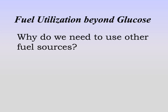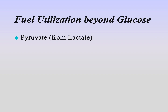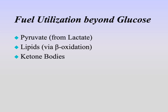We need to use other fuel sources because we are not constantly having a stable source of glucose. In order to meet energetic demands with fluctuation in our glucose levels, we know we're going to be able to use pyruvate and lactate. But we'll also be able to use lipids via beta-oxidation, and ketone bodies.